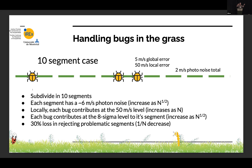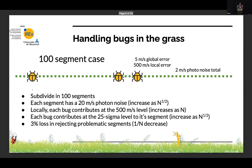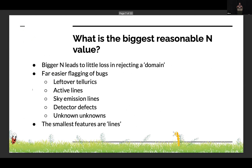You lose some domain by rejecting the affected segments, but not that much. Going to 100 segments, your little bugs become 25-sigma events — much easier to flag — and you lose less and less domain. So the bigger N, the better. You just go for the biggest reasonable N value.